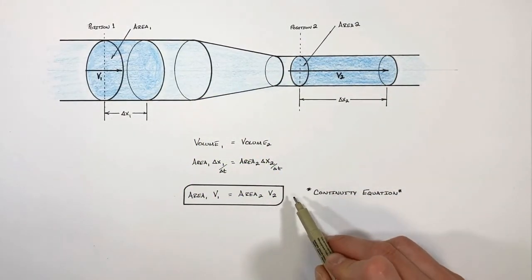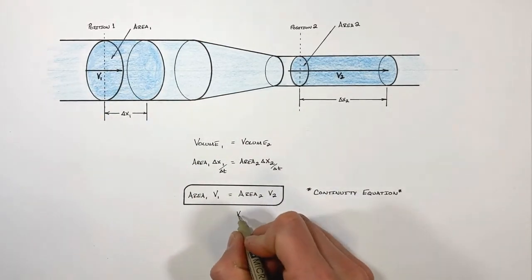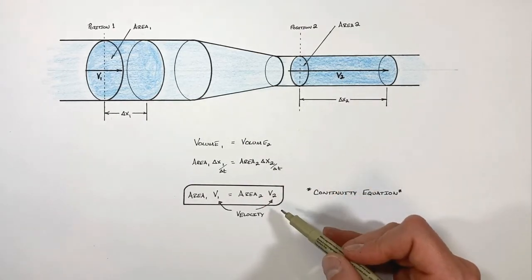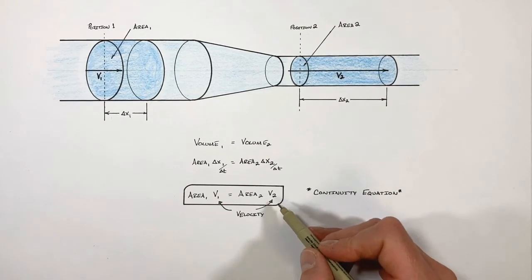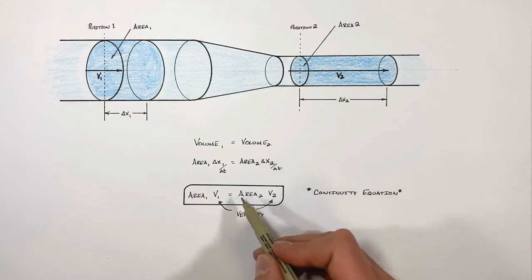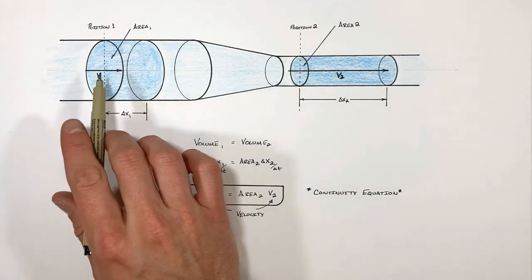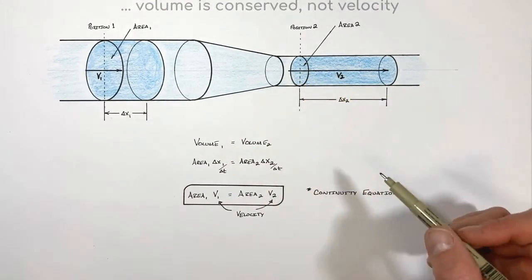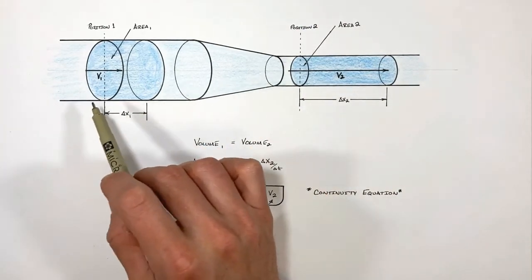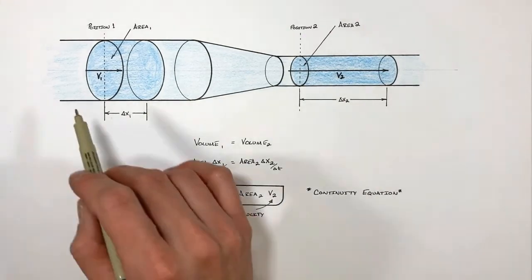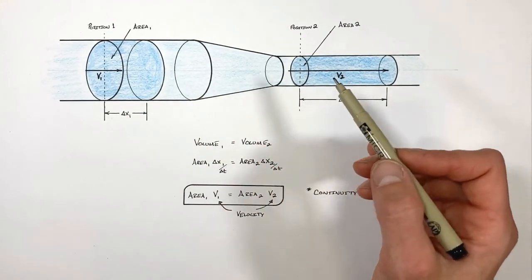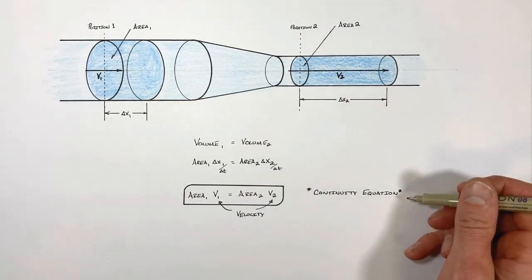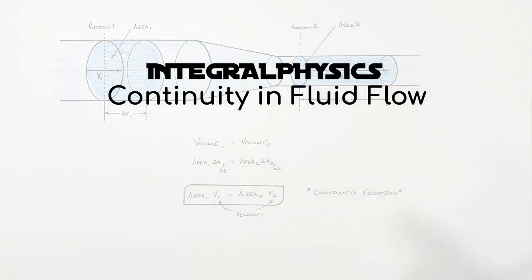Two things need to be pointed out. First, v here is velocity, not volume — it's easy to confuse the two when talking about volumes and then seeing v in the continuity equation. Sometimes you'll see this equation written with the density of the fluid in front of each term, which says that mass is conserved rather than volume. For an incompressible fluid like water or hydraulic fluid, the continuity equation relies on conservation of volume. For a compressible fluid like air, it becomes more complicated and we need to insert density into the formula. But this is the continuity equation for incompressible fluids.